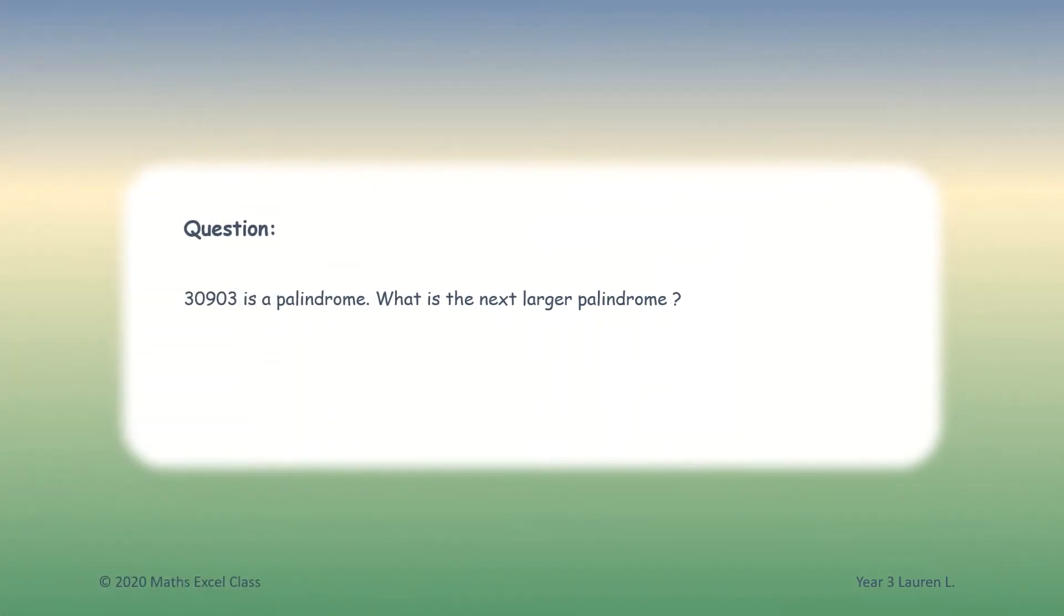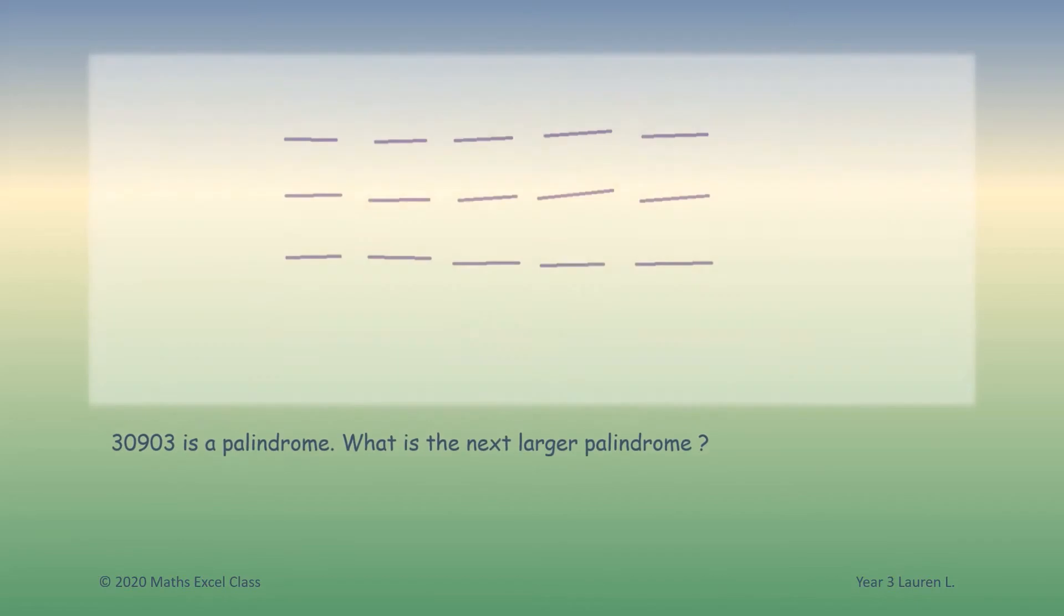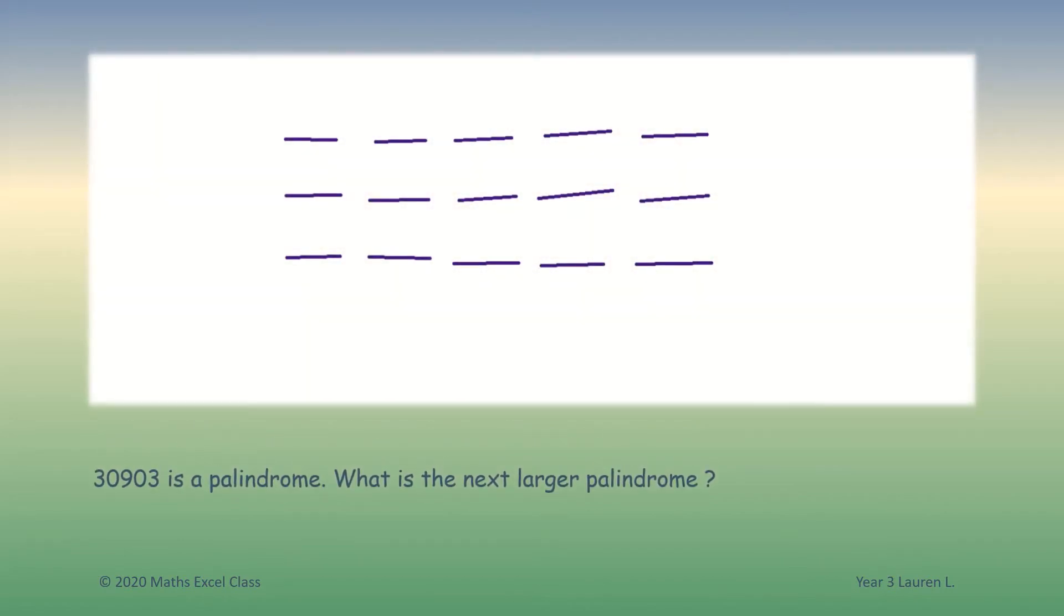30903 is a palindrome. What is the next larger palindrome? This is a five-digit palindromic number: 30903. A palindromic number is a number that is the same when its digits are put in reverse order.